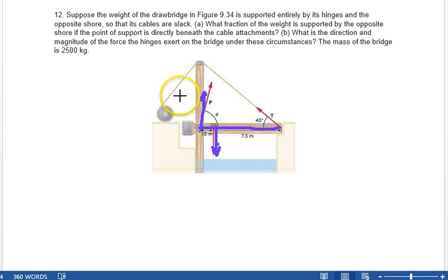And then there's no tension in the wire on problem 12. In fact, the bridge is resting on the opposite shore. And the real question is, what is the force on the shore on the opposite side? We've got the force on the hinge, we've got the force on the shore, and we've got the weight of the bridge. And those are the only forces at play at the moment.